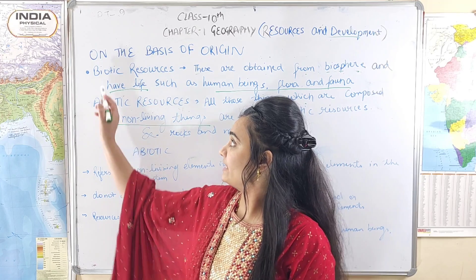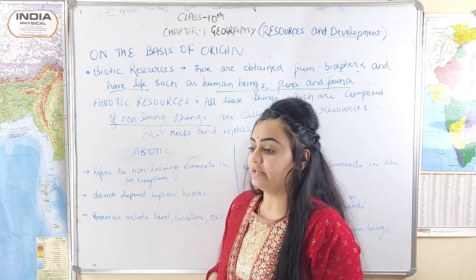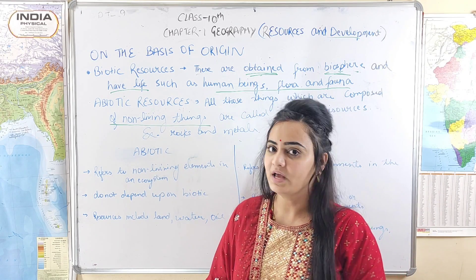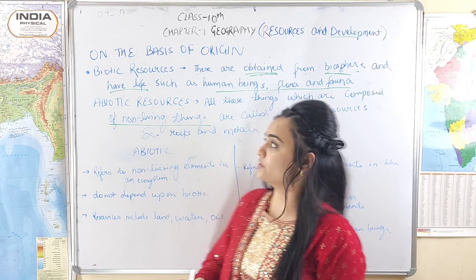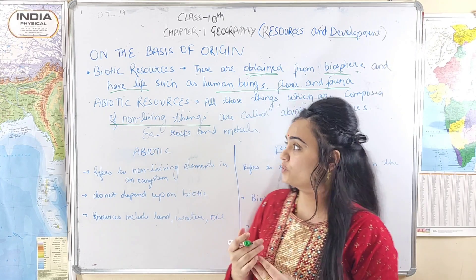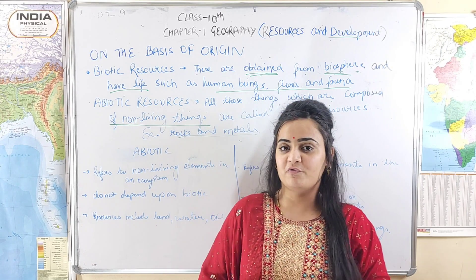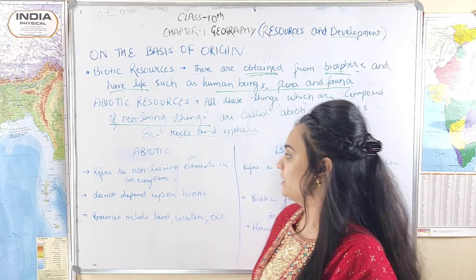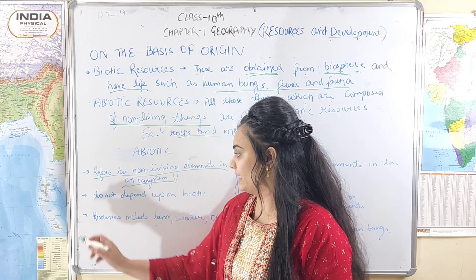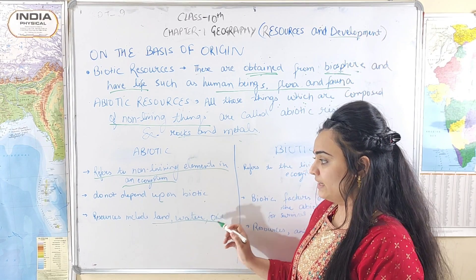On the basis of origin, resources are classified as biotic and abiotic. Biotic resources are obtained from the biosphere and have life — such as human beings, flora, and fauna. Abiotic resources are all those things which are composed of non-living things, for example rocks and metals. The key difference: abiotic refers to non-living elements in an ecosystem; abiotic resources do not depend upon biotic resources. They include land, water, and oil.